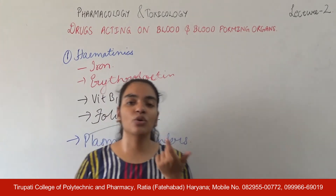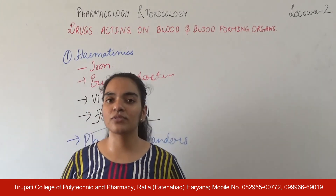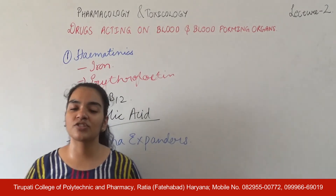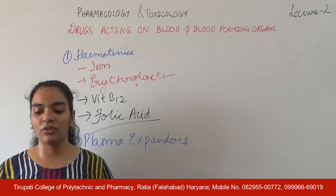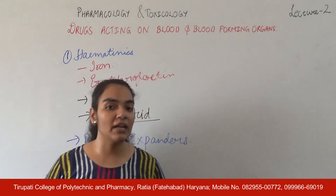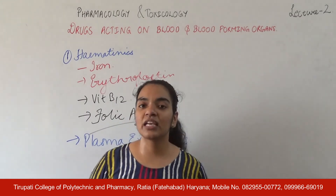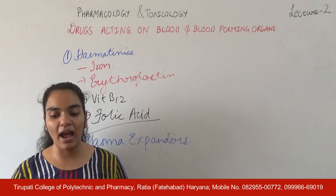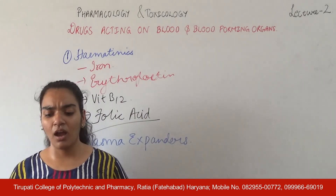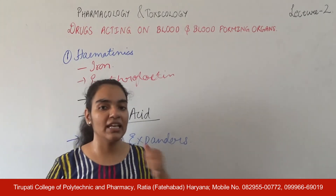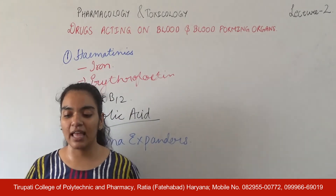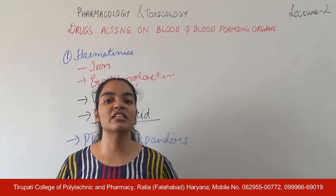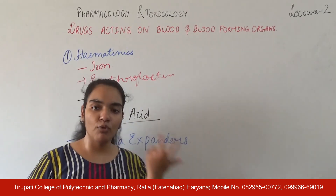Colloidal plasma substitutes include polysaccharides such as dextran 40, dextran 70, and dextran 150. Dextran 70 is the most commonly used plasma expander or blood substitute, effective for 24 hours with minimal side effects. Dextran 40 can cause hypersensitivity reactions but is rapidly active and decreases blood viscosity, preventing sludging.